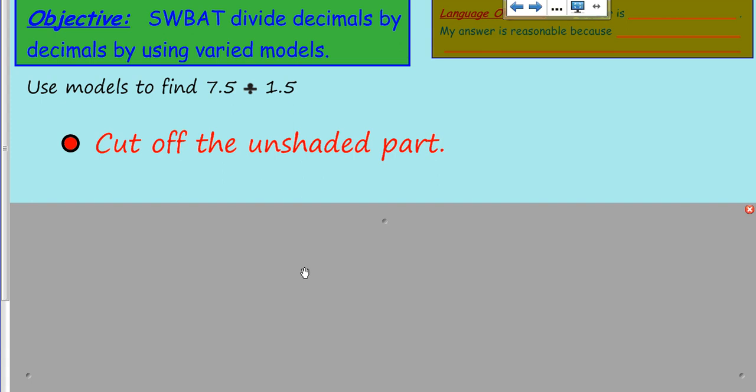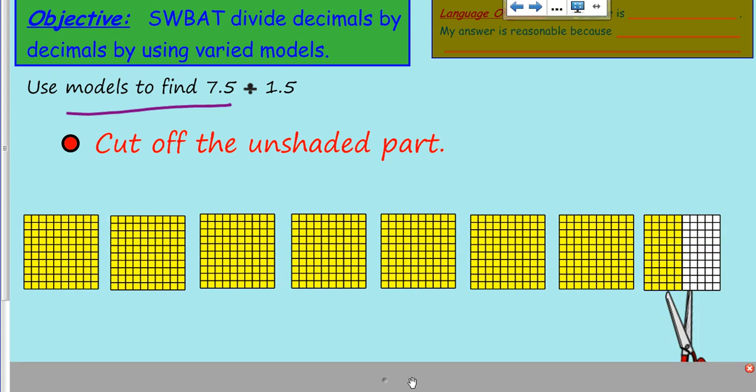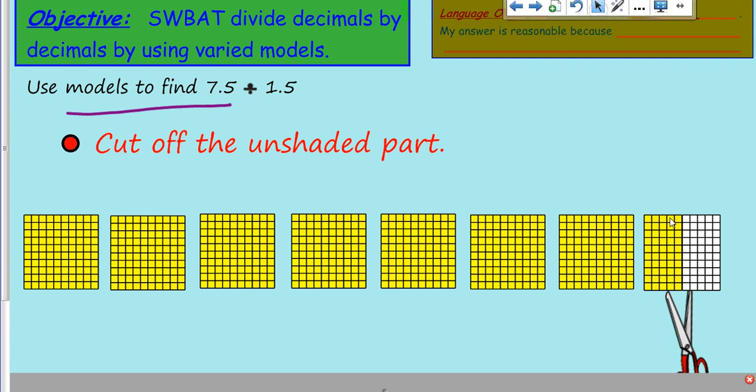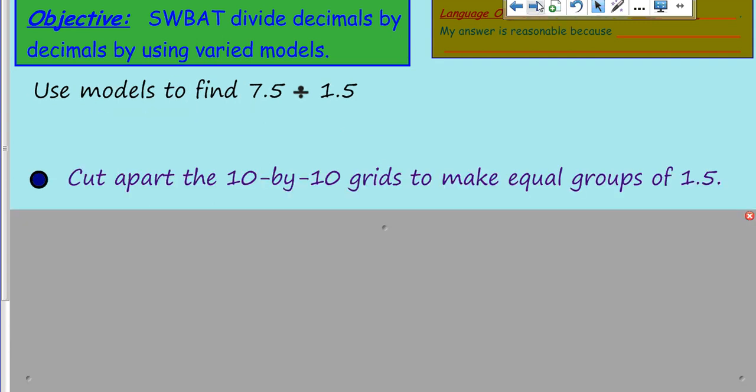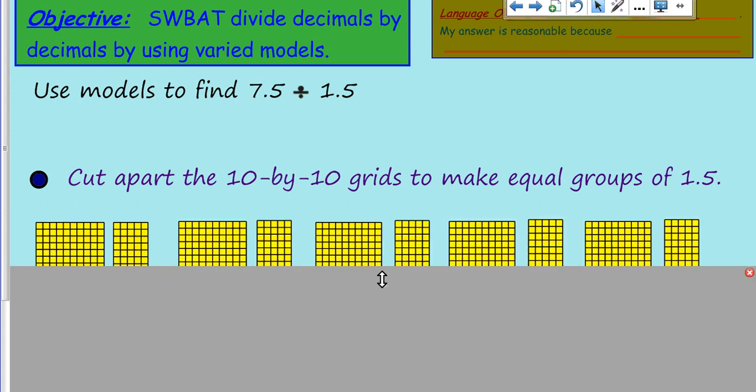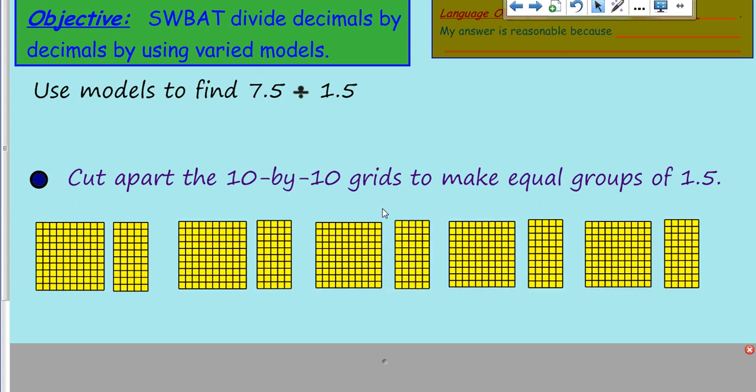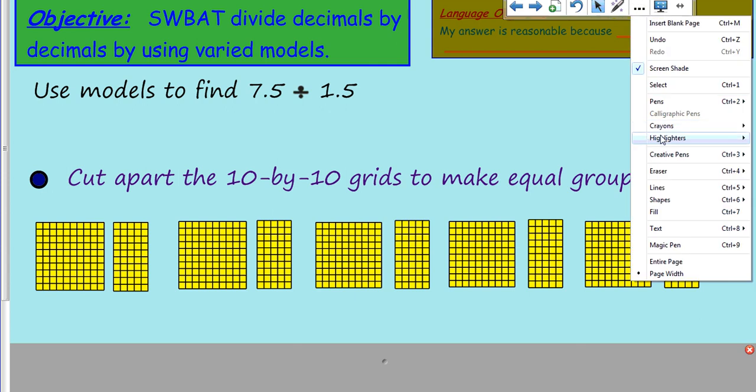Now use models again. We have cut off the unshaded part. I did that - my scissors went chop chop chop. We're going to take that section off so we only have our seven and a half because we don't need this white part, it's not part of the dividend.